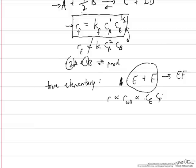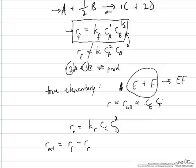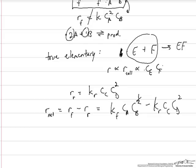We've described the rate expression for the forward reaction; now we need to describe the reverse reaction as well, C + 2D going back to A + half B. The reverse rate, R_R, equals K_reverse times the concentration of C to the first power times the concentration of D to the second power, based on the stoichiometry as written. That allows us to write the net reaction rate as the forward rate minus the reverse rate, and we substitute in our two expressions.